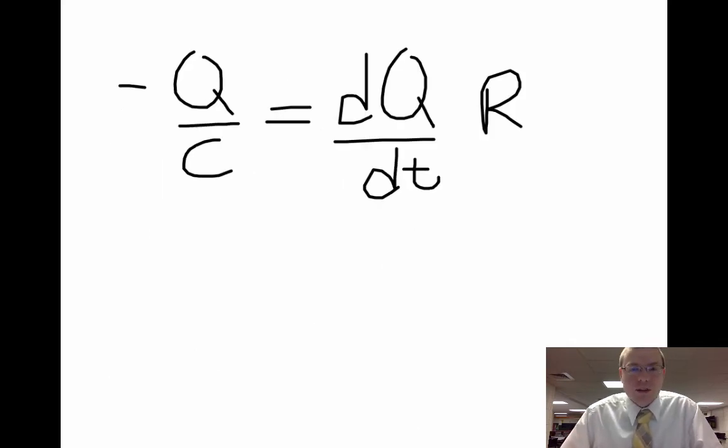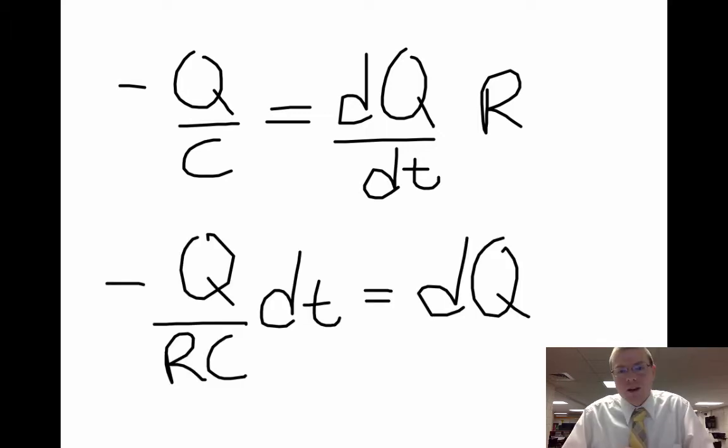So I'm going to move that Q over C to the other side. It makes it negative. I want to get everything away from dQ, so I'm going to move the R and the dt. So I'm almost there.